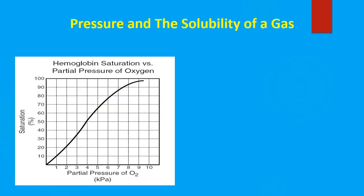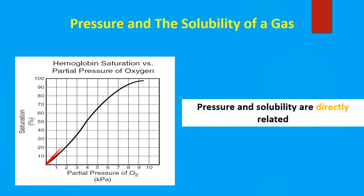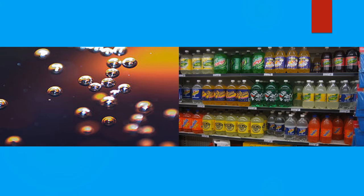So let's look at pressure on the solubility of a gas. If we look at the graph here, as partial pressure of oxygen increases, the percent saturation or the solubility also increases. If we decrease the pressure, going from right to left, saturation also decreases. So that means pressure and the solubility of a gas are directly related. In the production of carbonated beverages, carbon dioxide is added at high pressure and low temperature to water to create what we call carbonated water. Carbonated water is also known as carbonic acid.